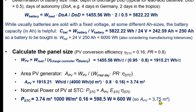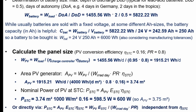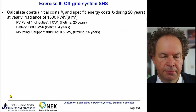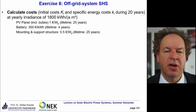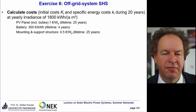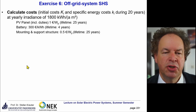The actual panel area is rounded up to 3.75 square meters, the next standard size. The nominal PV power under standard test conditions can also be calculated directly without needing the conversion efficiency separately. We now proceed to calculate the costs — both the initial investment costs (capital K) and the specific costs (small k) over 20 years.